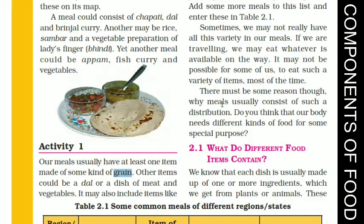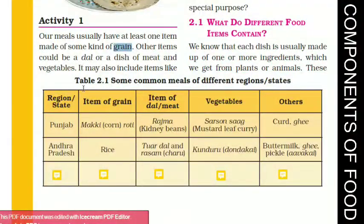Let's discuss Table 2.1. Here you can see Table 2.1 — some common meals of different regions or states. In this table, the first column is region or state, the second column is item of grain, the third column is item of dal or meat, the fourth column is vegetables, and the fifth column is others. Our meal is made up of one item of grain, another item might be dal, then vegetables, and others.